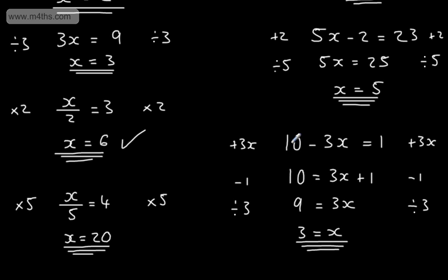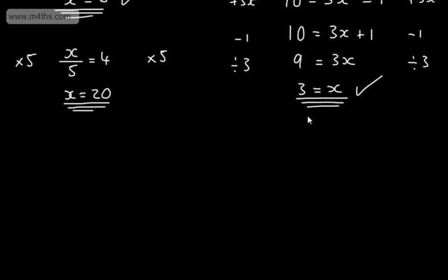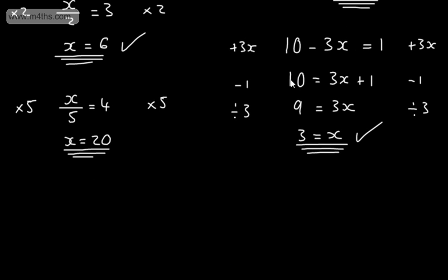Does that work? 10 minus 3 lots of 3: 3 lots of 3 is 9, and 10 minus 9 is 1. So we know it's correct. As you can see, using this particular approach keeps your work nice and tidy, and we can do it step by step.